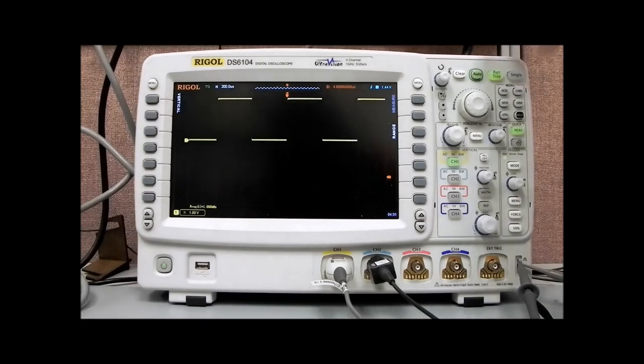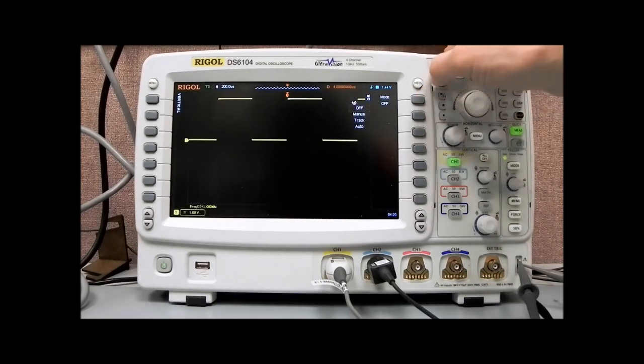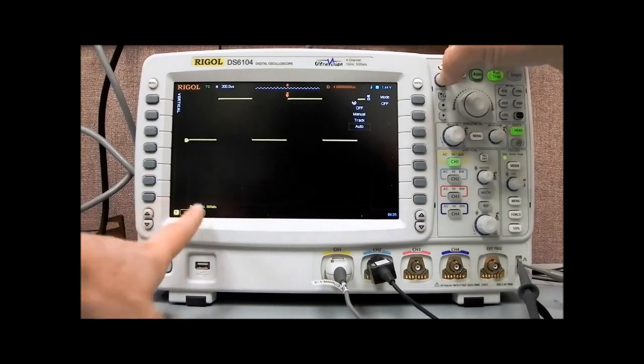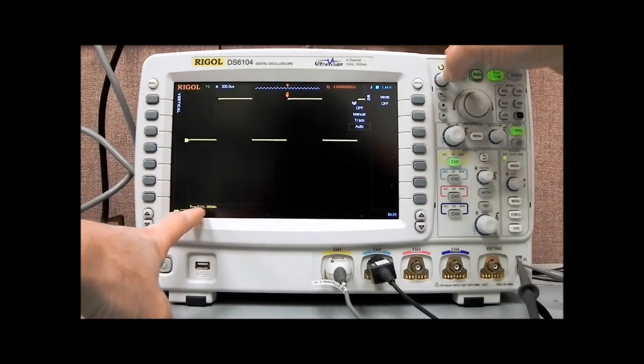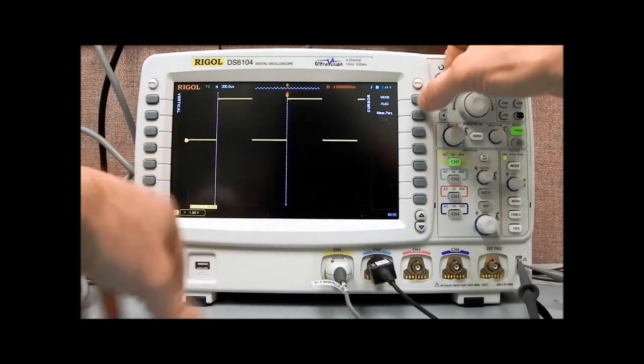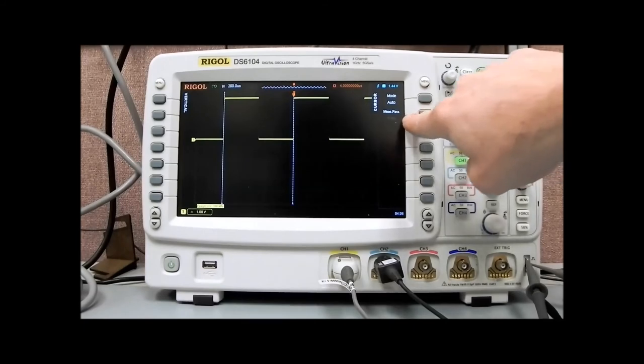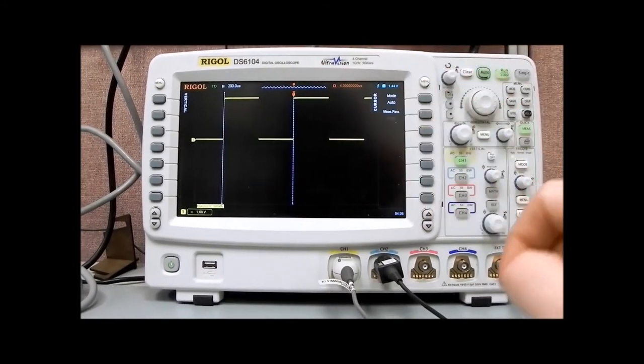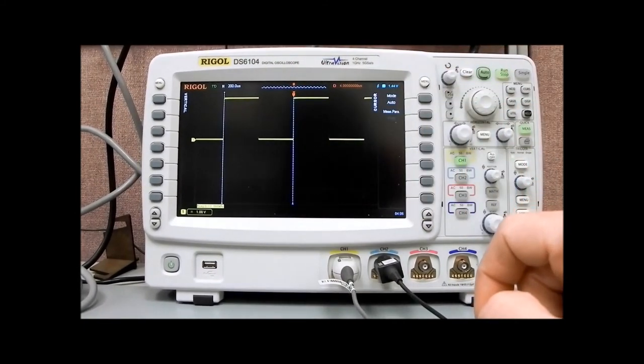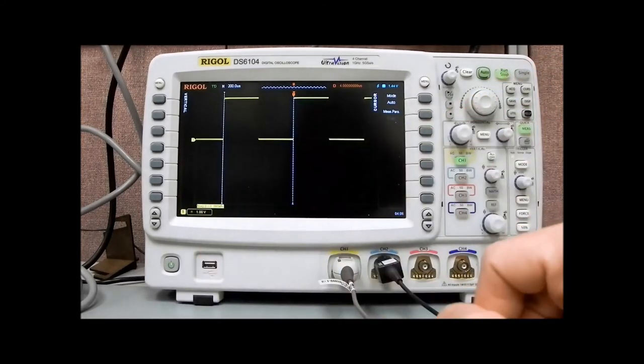We can also do some other things with measurements and cursors. If we come over here to the cursor area in the menu and pull cursors, we have a few different modes. We have manual, tracking, and auto. If we have a measurement pulled up over here and we hit auto, it'll actually give us the area frequency parameters. See how it says measurement parameters frequency? Now it's indicating where it's making those frequency measurements. It's been highlighted, which is really nice.